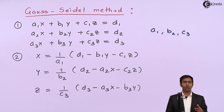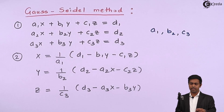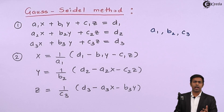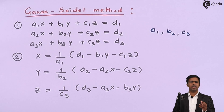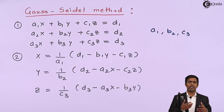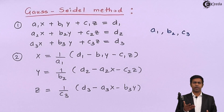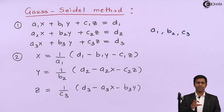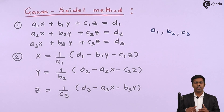To get the roots of the equations we use the method of iteration, because Gauss-Seidel is an iterative method. We go through multiple iterations or rounds, coming closer to the roots each time. Once we reach the desired accuracy, that is our final answer — the root of the equation.